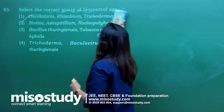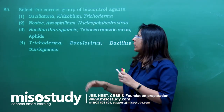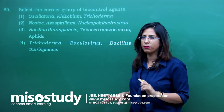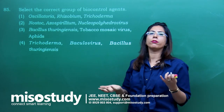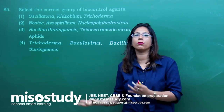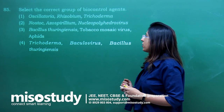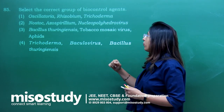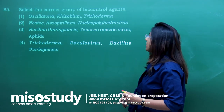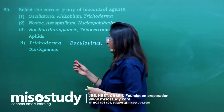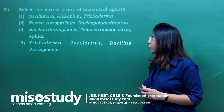Question number 85 — select the correct group of biocontrol agents. Biocontrol agents are those which control pathogens causing disease. In this case the correct answer is option 4 — which includes Trichoderma, Baculovirus, and Bacillus thuringiensis.